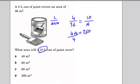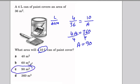Divide both sides by 4, so A is equal to 90. The answer is C, 90 square meters.